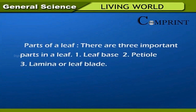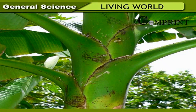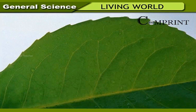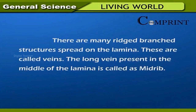Leaf. Parts of a leaf. There are three important parts in a leaf. The lower part of the leaf, where the leaf attaches to the stem near the node, is called the leaf base. The stem-like part of the leaf that joins the leaf blade to the stem is known as the petiole or leaf stalk. The green expanded portion of the leaf is called the lamina or leaf blade. It is green in color due to the presence of chlorophyll. There are many rigid branched structures spread on the lamina called veins. The long vein present in the middle of the lamina is called the midrib.